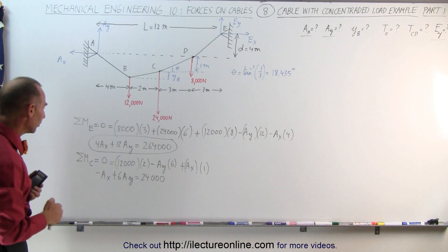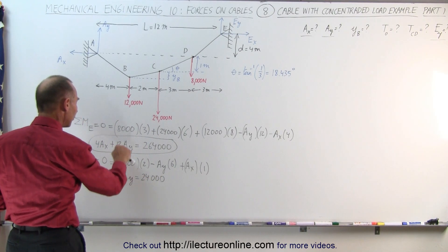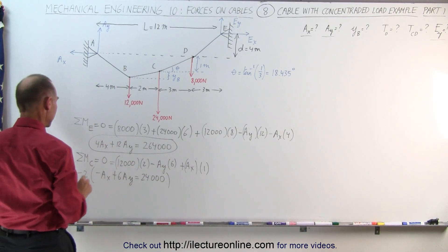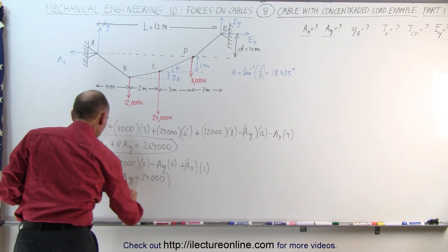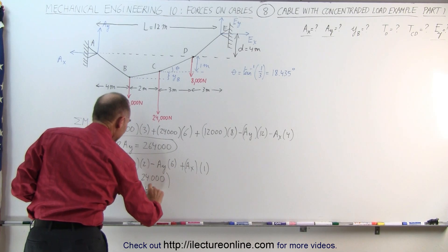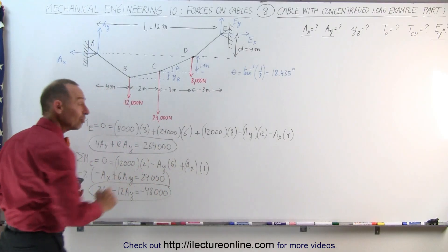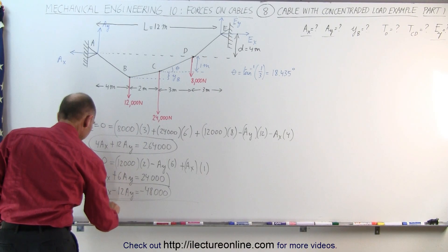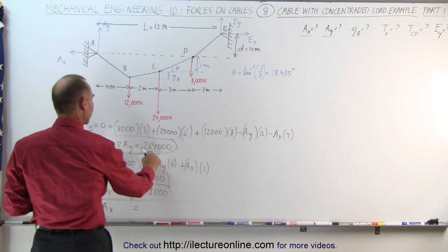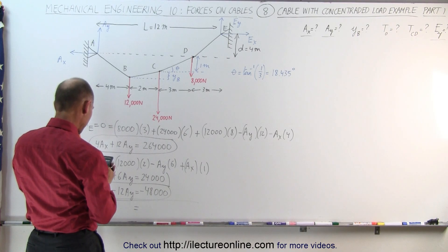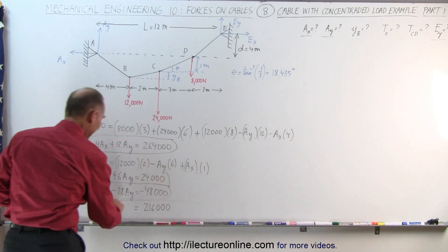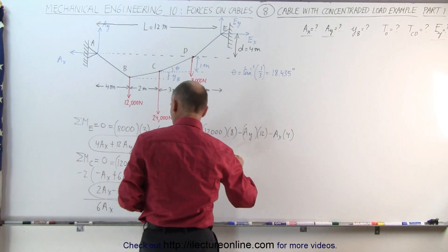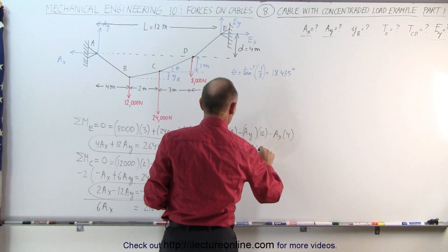To eliminate one variable, multiply the second equation by negative 2, giving: 2 A sub X minus 12 A sub Y equals negative 48,000. Adding this to the first equation: 4 plus 2 gives 6 A sub X, the A sub Y terms cancel out, and 264,000 minus 48,000 equals 216,000. Dividing both sides by 6 gives 36,000. So A sub X is equal to 36,000 newtons.